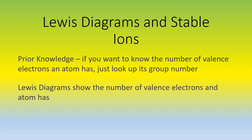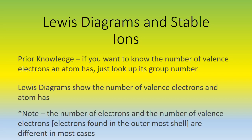Lewis diagrams show us how many valence electrons an atom has. It's important to note that the number of valence electrons and the number of regular electrons are not necessarily the same because valence electrons are found in the outermost shell, while regular electrons are found in every shell.